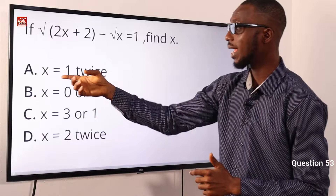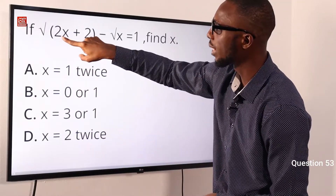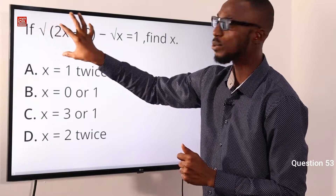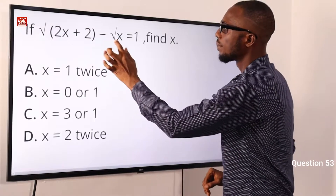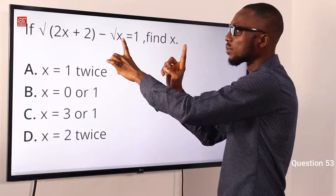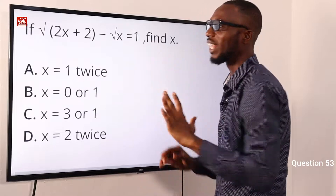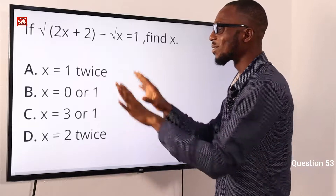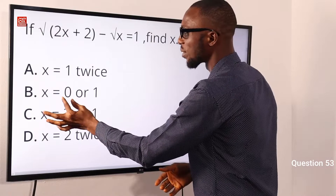Let's pick x equals 1: 2 times 1 is 2, plus 2 is 4, square root of 4 is 2. Then minus root x, where x is 1, so minus root 1 is minus 1. So 2 minus 1 equals 1. Option A is correct. Let's verify by trying x equals 0: root 2 is approximately 1.4, minus root 0 is 1.4, which does not equal 1 — invalid.